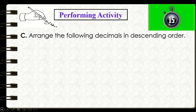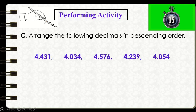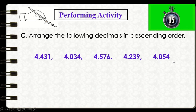For set C, arrange the following decimals in descending order. The numbers are: 4 and 431 thousandths, 4 and 34 thousandths, 4 and 576 thousandths, 4 and 239 thousandths, and 4 and 54 thousandths. I'll give you 15 seconds to arrange these numbers in descending — greatest to least — order. If you need a longer time, you may pause this video.